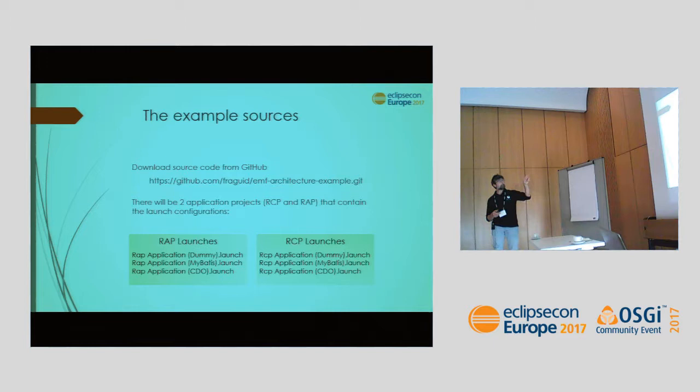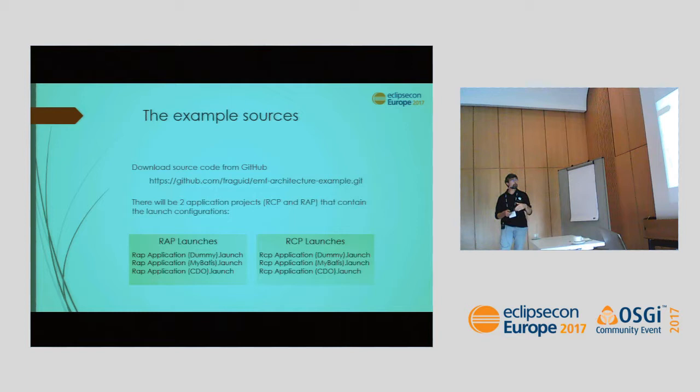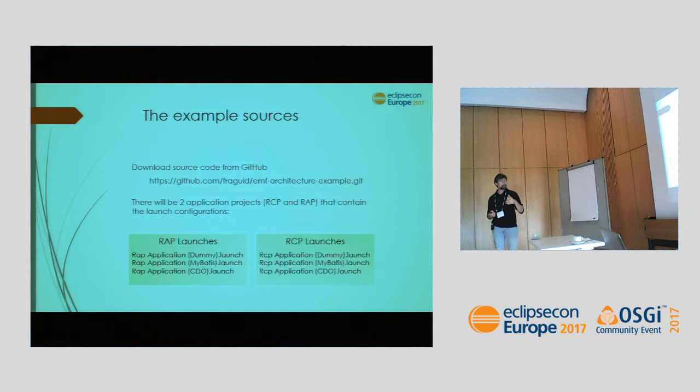You can find the example code at the repository shown here. Inside the two application projects — the RCP and the RAP projects — you will find a `launches` folder containing three launches, one for each persistence implementation: dummy, CDO, and MyBatis. For each platform type, so in total we have six combinations.